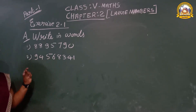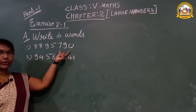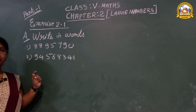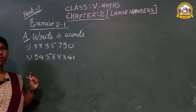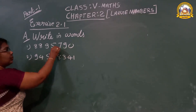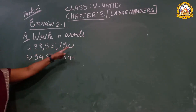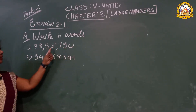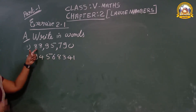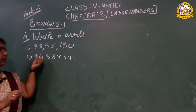Number names means you have to write in spellings. Listen, I told you — first you have to use the commas, otherwise you will make mistakes. First period: how many digits? Three — one, two, three. Then two. Ones, tens, hundred, thousand, ten thousand, ten lakh. I told you each period you should read together.